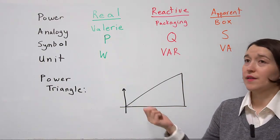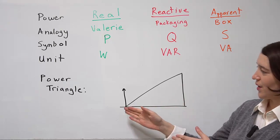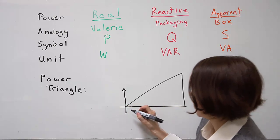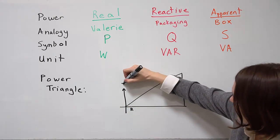We often represent these types of powers using the power triangle. You can think about this axis as the real axis going in this direction, and then the imaginary axis going in this direction vertically.